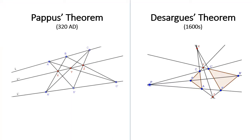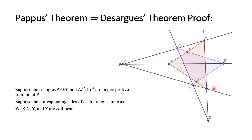The Pappus theorem was discovered around 320 AD and the Desargues theorem was discovered in the 1600s. But is there any relation between the Pappus theorem and the Desargues theorem? The answer is yes — an interesting fact is that the Pappus theorem implies the Desargues theorem. Suppose the triangle ABC and the triangle A'B'C' are in perspective from the point P, and the corresponding sides intersect: line A'B' meets line AB at point X, line BC meets line B'C' at point Y, and line A'C' meets line AC at point Z. We want to prove that points X, Y, and Z are collinear using the Pappus theorem.